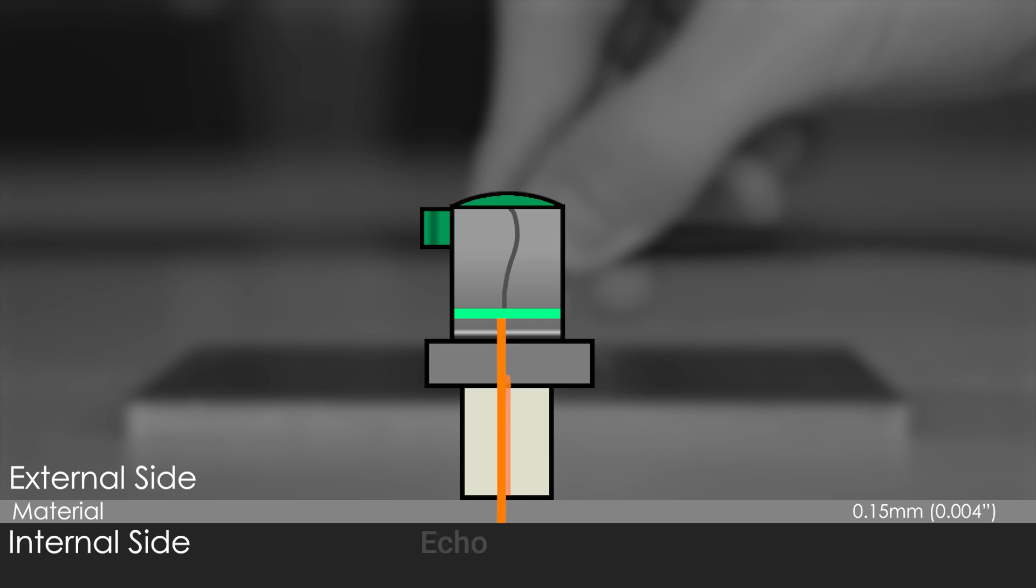The first echo occurs when the pulse hits the back wall, and the second echo occurs when the pulse hits the back wall again. The time between these echoes, combined with the pulse speed, enables the Dakota PCX to measure very thin materials with high precision.